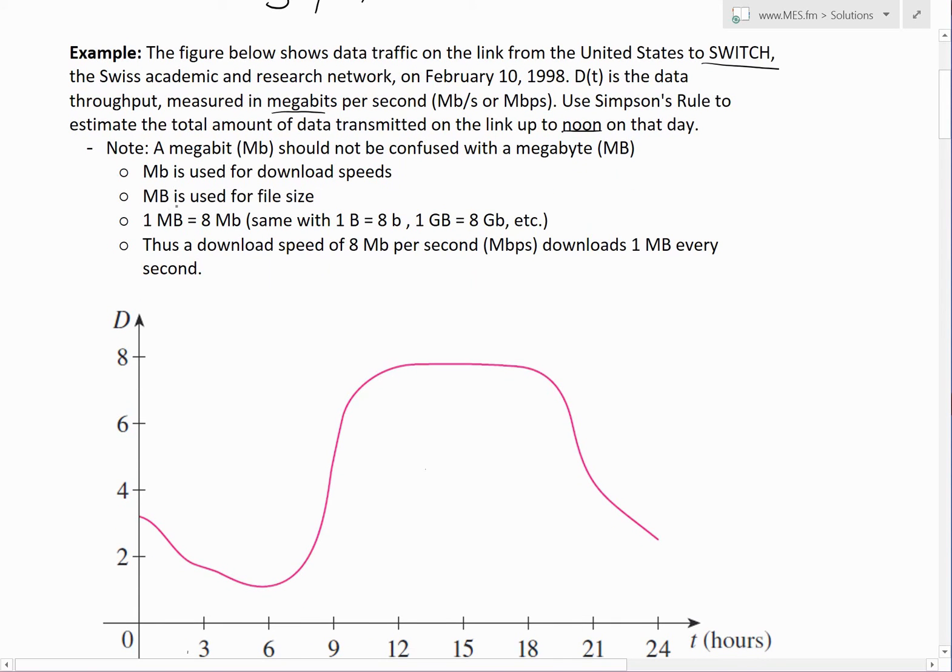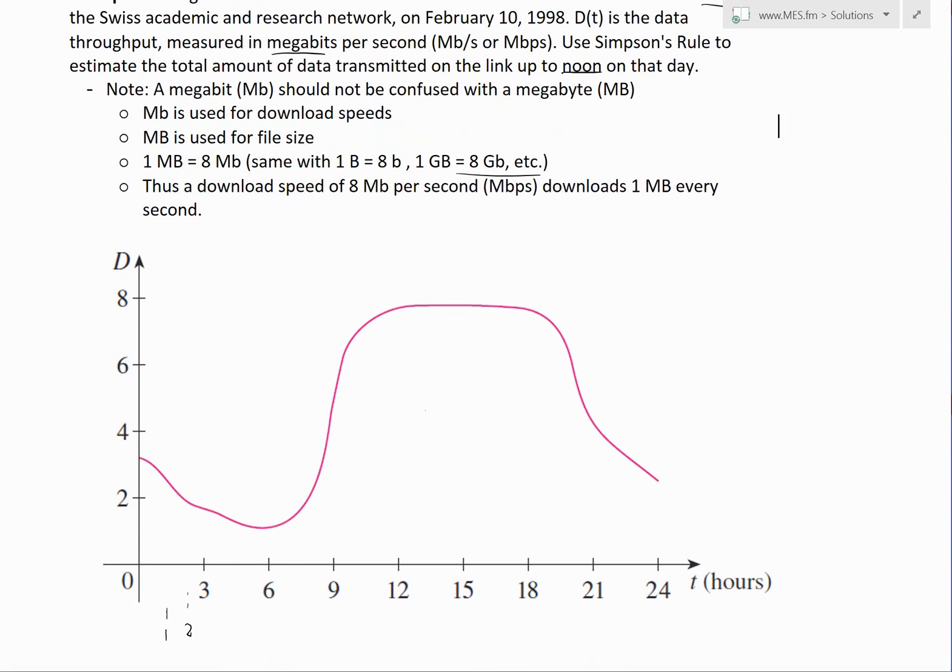Basically Mb is used for download speeds and MB is used for file size. This is a popular one, megabytes. It's just an 8-bit, it works in 8-bit. So that's why 1 megabyte equals 8 megabits, and same with 1 byte equals 8 bits, and 1 gigabyte equals 8 gigabits, etc. I'm not going to dive too deeply into this. Thus, a download speed of 8 megabits per second is simply 1 megabyte every second.